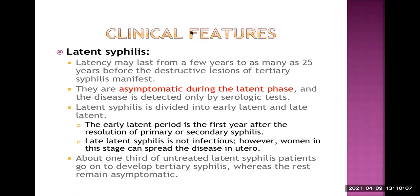Latent syphilis means hidden — there are no signs and symptoms, but the organism is still inside the body. Latency may last from a few years to as many as 25 years before the destructive lesions of tertiary syphilis manifest. Patients are asymptomatic during the latent phase, so the disease is diagnosed only by laboratory serological tests.